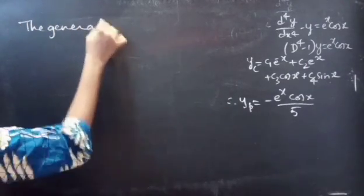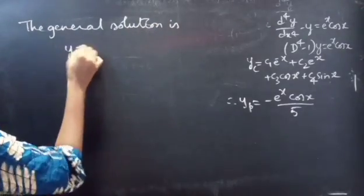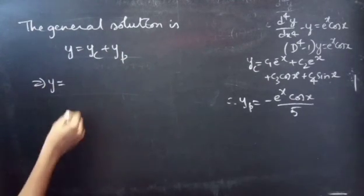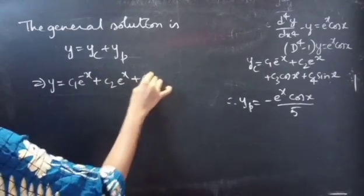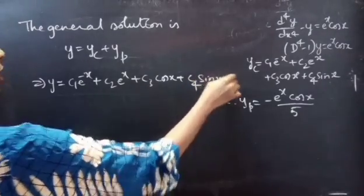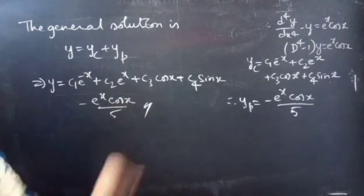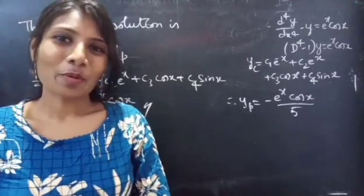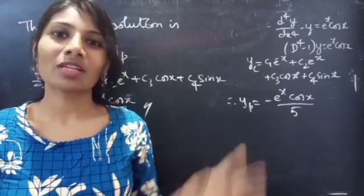Therefore yp = −e^x cos x / 5. The general solution is y = yc + yp: y = c₁e^(−x) + c₂e^x + c₃ cos x + c₄ sin x − (e^x cos x)/5. So we have seen a problem from higher order linear differential equations. Hope you will understand, and we will see you in the next video — until then, bye bye.